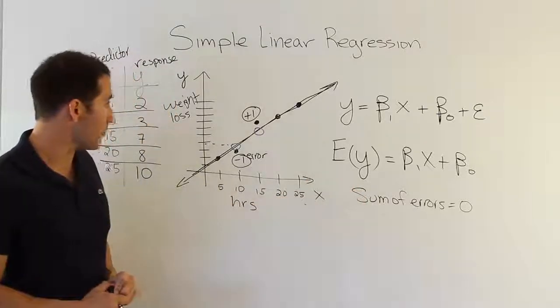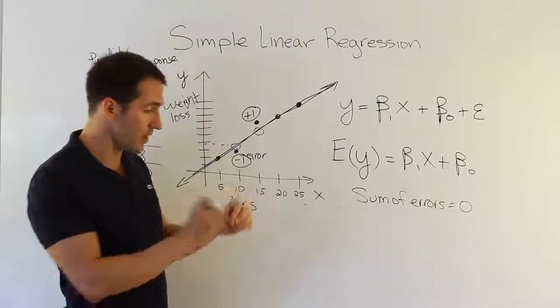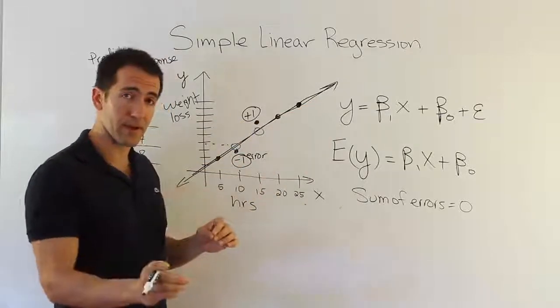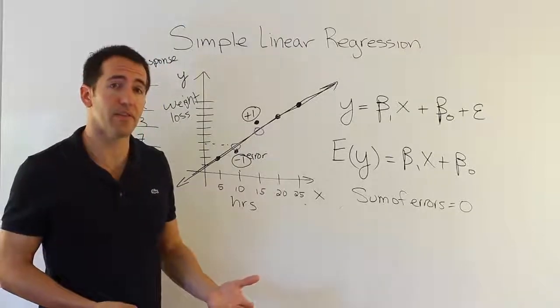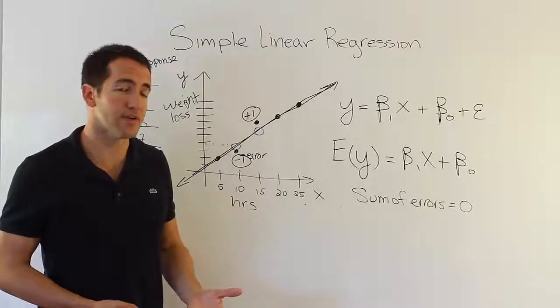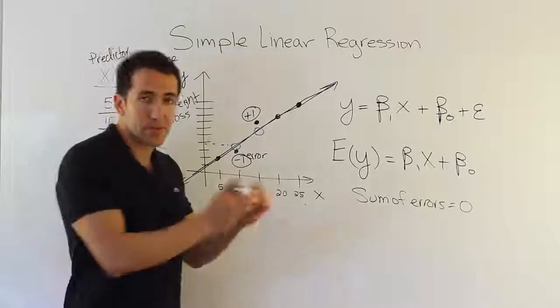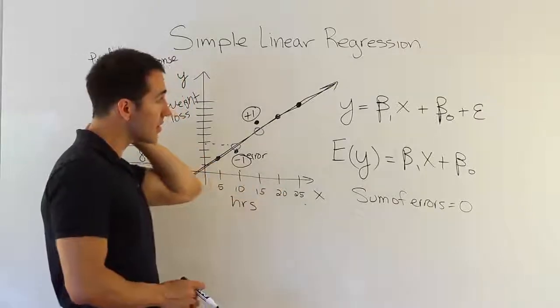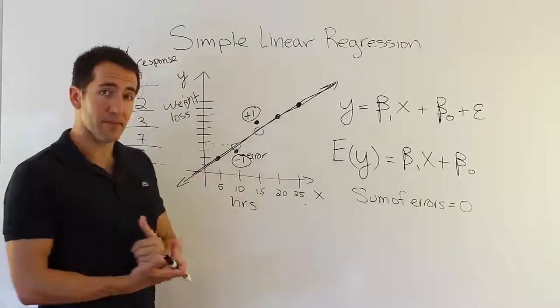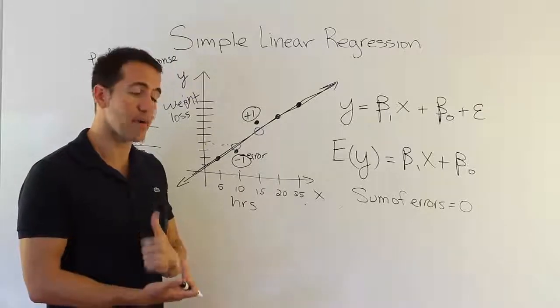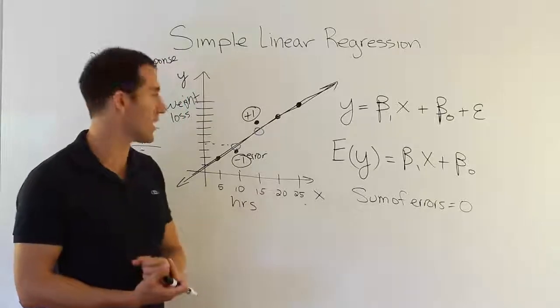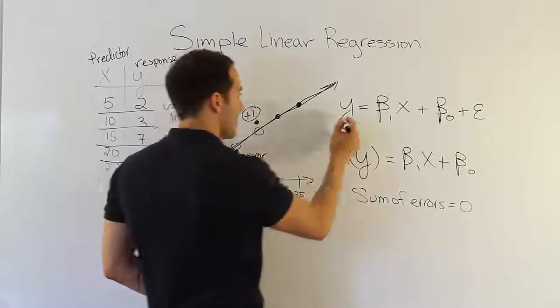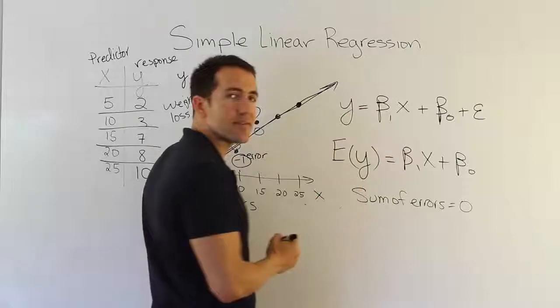The reason why that's helpful is that means that I can, instead of looking at the precise Y value for a given X value, so if you come to me and say, well, I'm going to spend 10 hours this month in the gym on the treadmill, what weight loss will I achieve? I'm not going to say, well, you are precisely going to achieve this amount of weight loss. Instead, what I'm going to say is, on average, people who spend 10 hours in the gym exercising on the treadmill will lose this much weight, on average, I'll say.